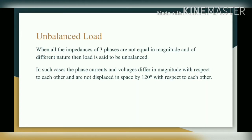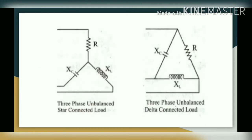Unbalanced load: when all the impedances of three phases are not equal in magnitude and of different nature, then the load is said to be unbalanced. In such cases, the phase currents and voltages differ in magnitude and are not displaced in space by 120 degrees with respect to each other. For example, Z1 may be resistive, Z2 inductive, and Z3 capacitive — that load is termed as unbalanced load, and the current in each phase is different.